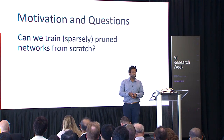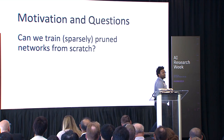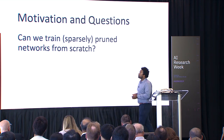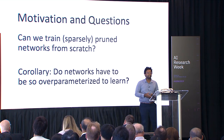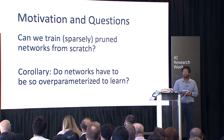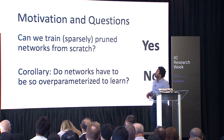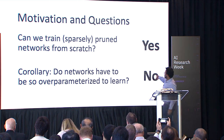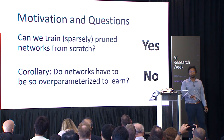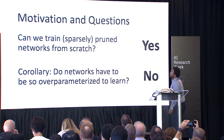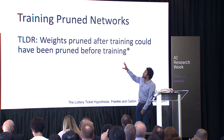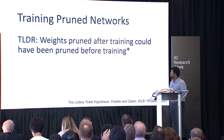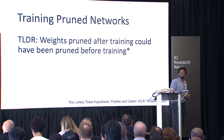In our work, we've been trying to challenge this. We're looking at these results, understanding what's going on, and asking: can we actually do better? Can we do this during training? A corollary question is: do these networks need to be so large to learn in the first place? The answers we've been exploring are: yes, there are small networks that can train effectively, and perhaps no, these networks don't need to be quite so over-parameterized.